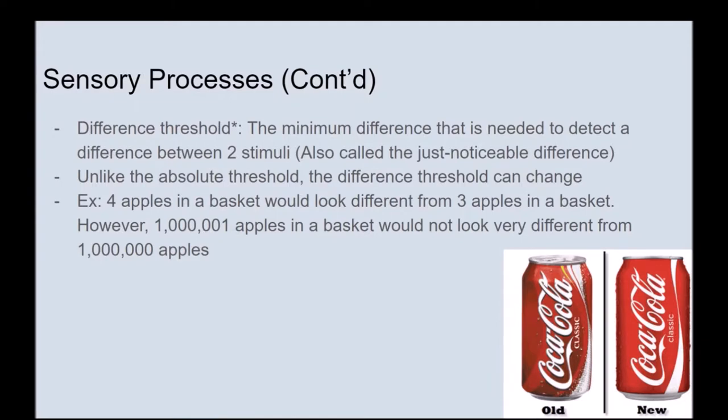We also want to talk about difference thresholds. A difference threshold is the minimum difference needed to detect a difference between two stimuli, and this is also called the just noticeable difference. Unlike the absolute threshold, the difference threshold can change. For example, four apples in a basket would look different from three apples, but a million and one apples would not look very different from one million apples.